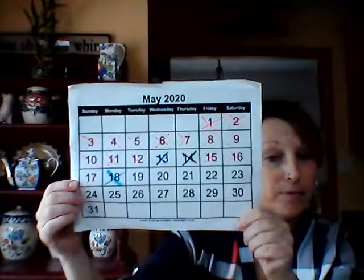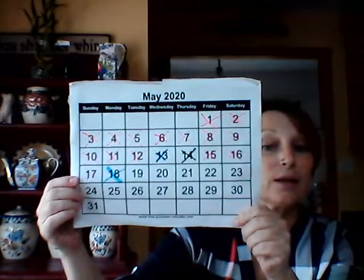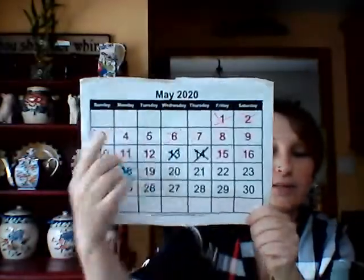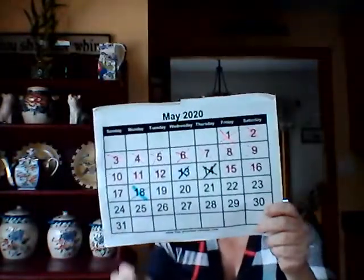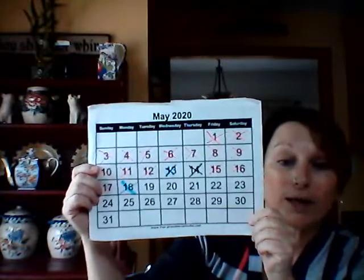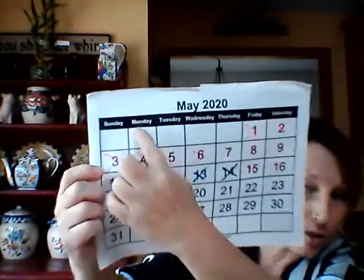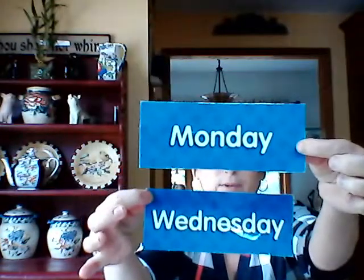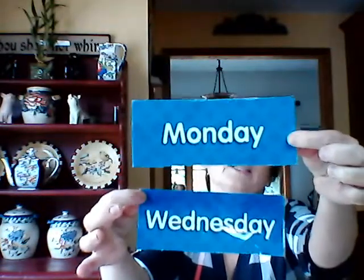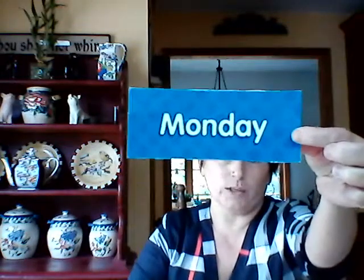Very good! Now I need you to find the year. The year is at the top of your calendar next to the month. Where is the year? There it is. Excellent! Now looking at your calendar, please tell me what yesterday was. Yesterday's date was the 18th. Was yesterday Monday or Wednesday? Yesterday was the 18th — it was Monday.